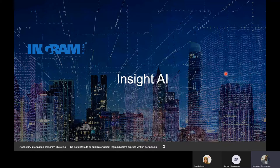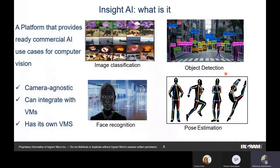The first topic is commercial offers in computer vision. As a quick recap from the last session, there are four main computer vision tasks. The first is image classification — the computer's ability to identify what a photo or video shows, such as a video of an elephant or a flower.